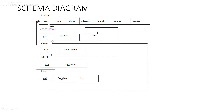Event has the attributes USN and event name, where USN is the foreign key derived from student. College has USN and college name as attributes where USN is the primary key. Fees has PID, fee date, and fee, where PID is considered as the primary key.